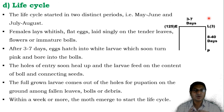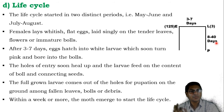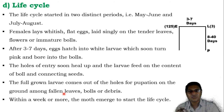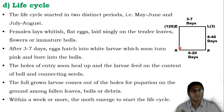The full grown larvae come out of the holes, which takes around 8 to 40 days depending on environmental or climatic conditions. After completion of the larval stage, the full grown larvae come out from the hole for pupation and move toward the ground among fallen leaves, balls or debris. The pupation period is observed under the soil. Within a week or more, the moth emerges out to start the life cycle again. Four different stages are present: egg, larva, pupa and adult.